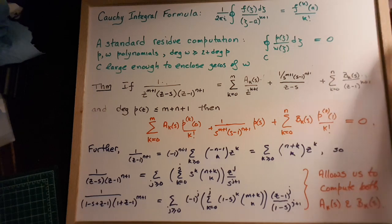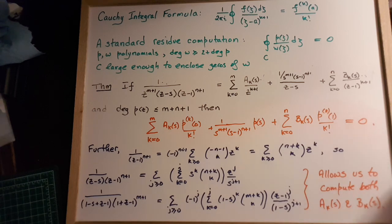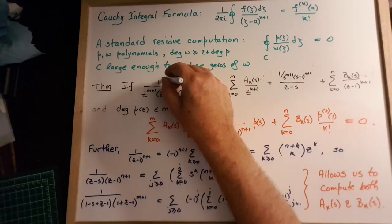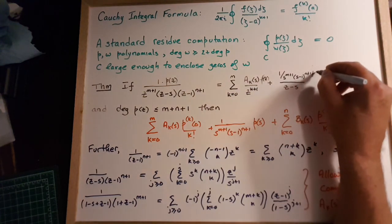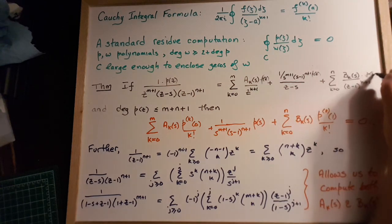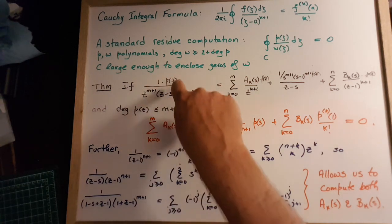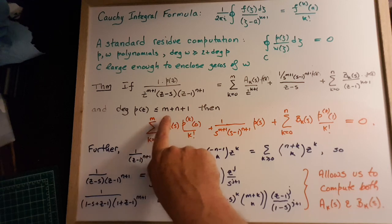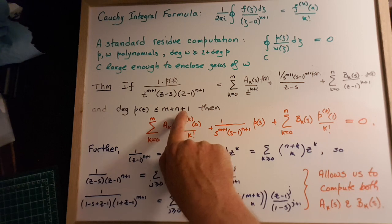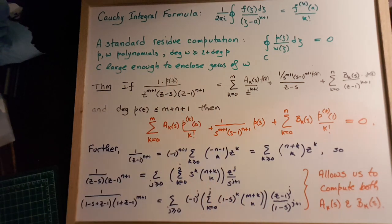Now, setting aside the question of identifying the a's and b's for a moment, we multiply this whole partial fraction decomposition by p of z, with a factor of 2πi as well. If the degree of the polynomial p of z is less than or equal to m plus n plus 1, then that is at least 2 less than the degree on the bottom, which is m plus n plus 3. So the integral of this over a large enough contour is going to be 0.